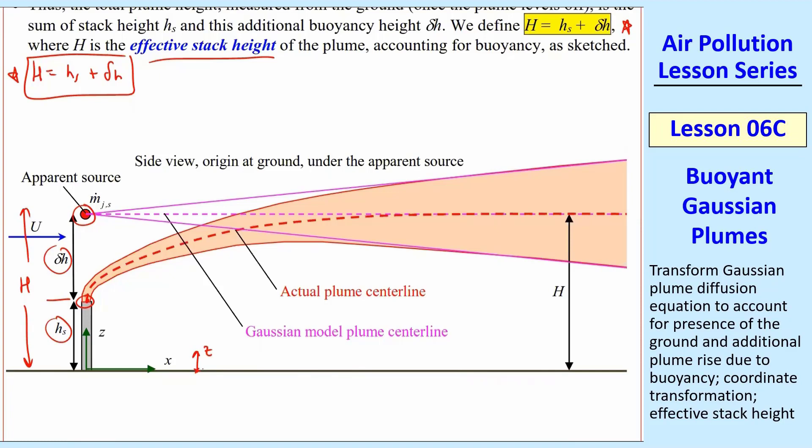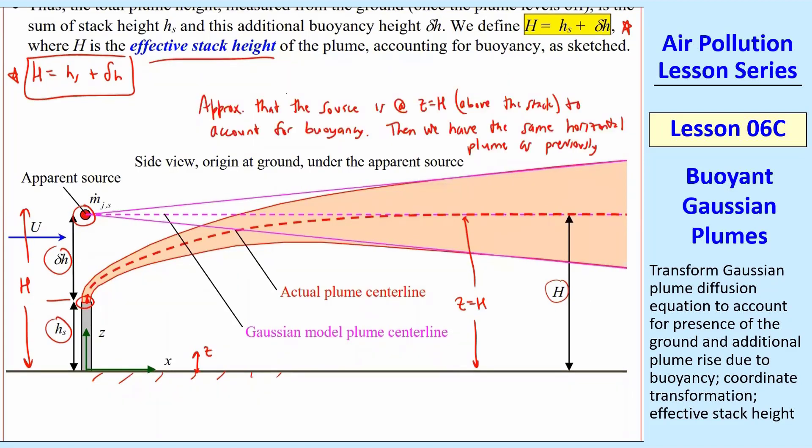And so z equals zero at the ground as before. To go to the center line of the plume, we have to go up to z equal h. So z equal capital H up to the center line, and that's where we're going to put our source. So what we're really doing is we approximate that the source is at z equal h above the stack here at this location to account for buoyancy. And then we have the same horizontal plume as previously, which I now show in purple here. So this is the plume we're actually modeling.